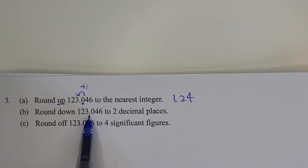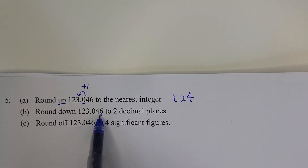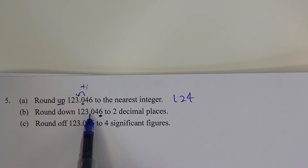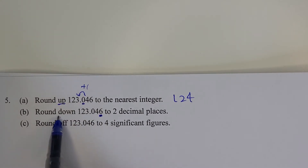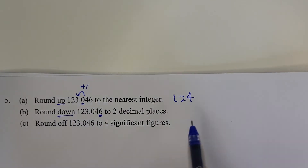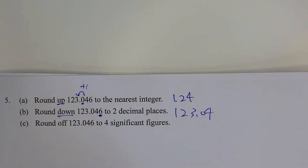Part b: run down this number to two decimal places. Look at the second decimal place. Normally in rounding off you might round up if the next digit is 6, but since you are running down you must not add — always don't add — so the answer is 123.04.